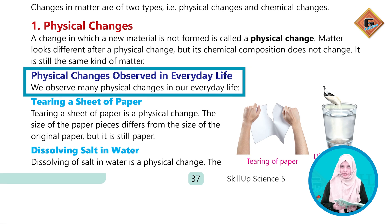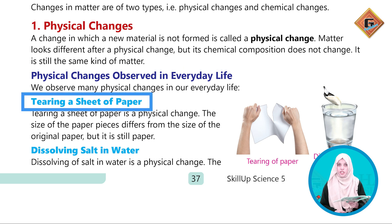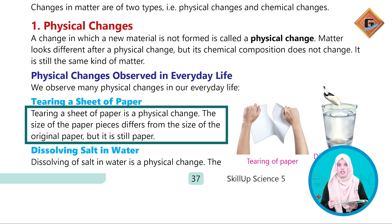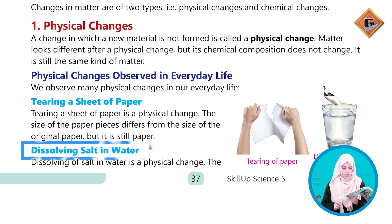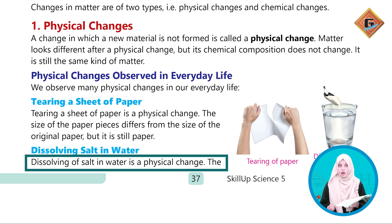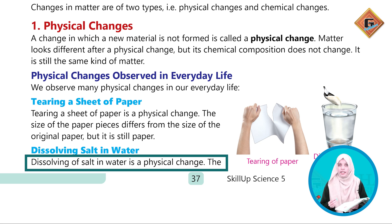Physical changes observed in everyday life۔ First ہے tearing of a paper sheet — جب ہم ایک paper sheet کو tear کرتے ہیں تو اس کی physical property تو change ہو جاتی ہے، وہ two یا three pieces میں convert ہو جاتا ہے، لیکن جو اس کی chemical composition ہوتی ہے وہ بالکل بھی change نہیں ہوتی۔ Dissolving salt in water — جب ہم water میں salt کو dissolve کریں گے تو water کی physical properties تو change ہوگی لیکن chemical composition of salt بالکل بھی change نہیں ہوگی، وہ as it is same رہے گی۔